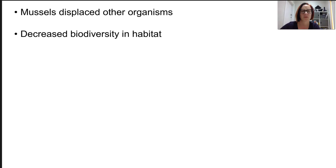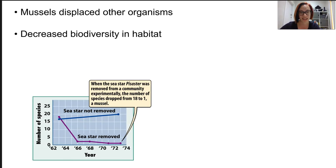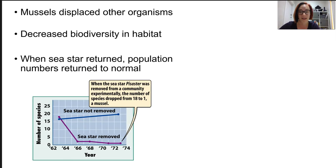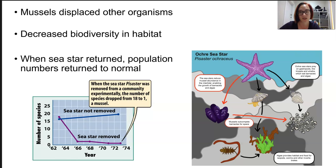So as soon as the sea star were returned, interestingly, the muscle numbers went back to normal and all the other organisms started to return to the habitat. The sea star is an example of a keystone species. Its presence allowed for the stable coexistence of a large number of other species because it limited that muscle to a narrow niche.